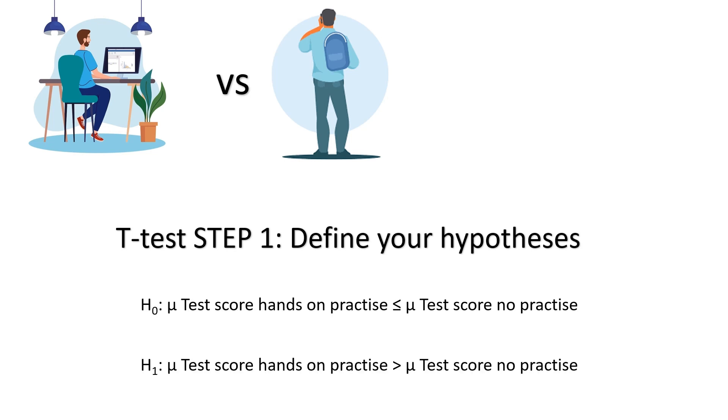Okay, so my alternate hypothesis is that the average test score of people who do hands-on practice will be higher than those who do not practice. That means that my null hypothesis will be that the average test score of people who do hands-on practice is less than or equal to people who do not practice.